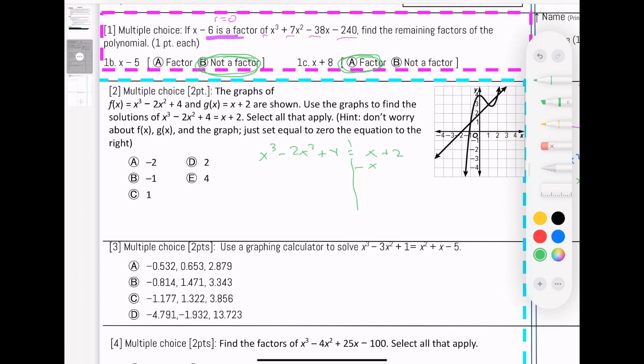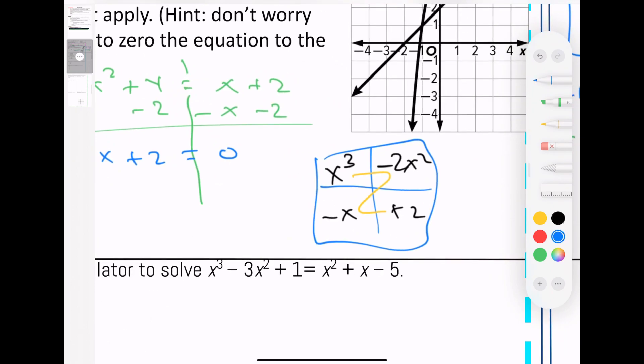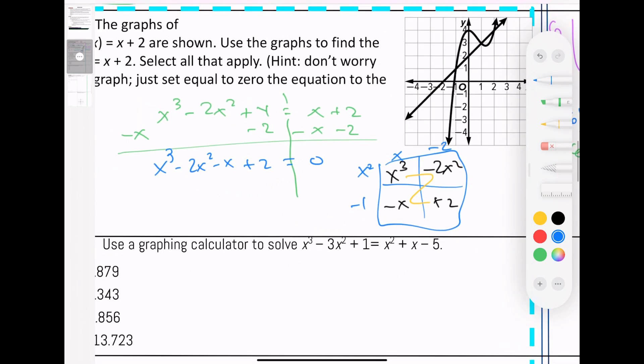I'm going to move it over the equal sign. I have no like terms. I'm left with x to the third minus 2x squared minus x plus 2 equals zero. I have four terms, so let's see if it fits inside a box. We're going to go in a Z: x to the third, minus 2x squared, minus x, plus 2. Take out the greatest common factor. That'll be a negative 1 and that will have to be a negative 2. So that gives me x minus 2 times x squared minus 1.